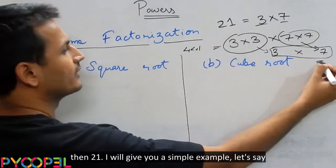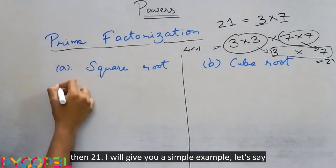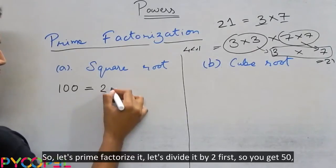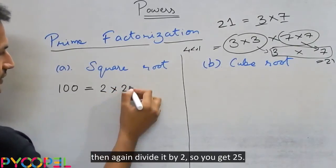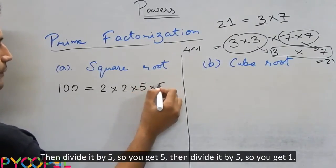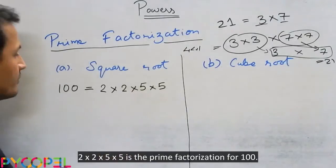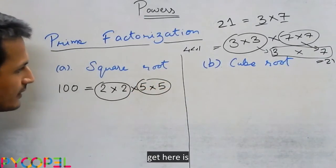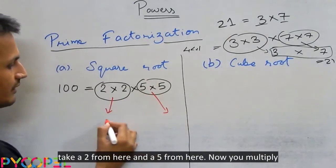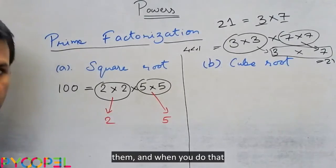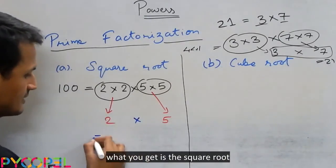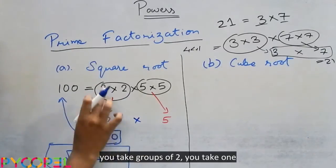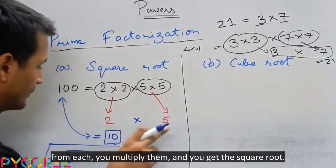Suppose that was 441, then you get 21. Let's take a simpler example: 100 is the number for which we have to find the square root. Let's prime factorize it — divide by 2 to get 50, again by 2 to get 25, then by 5 to get 5, then by 5 to get 1. So the prime factorization of 100 is 2 into 2 into 5 into 5. Now group these: take one 2 and one 5, multiply them, and you get the square root of 100.